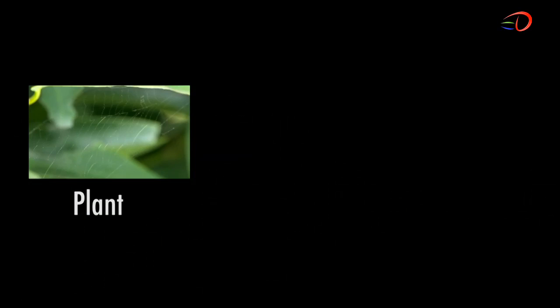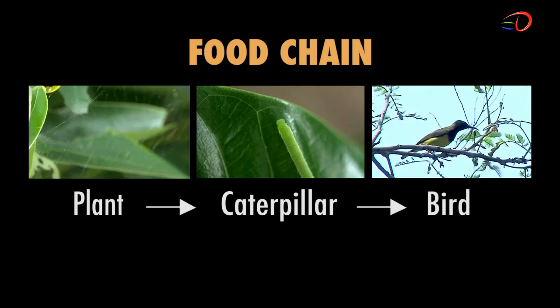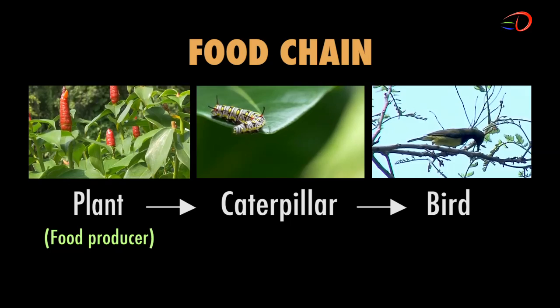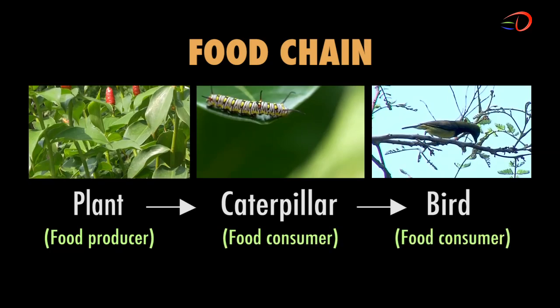The relationship between organisms can be represented in a food chain. In this food chain, the caterpillar eats the plant and the bird eats the caterpillar. In a food chain, the plant is the food producer as they make food through a process called photosynthesis. The caterpillar and the bird are food consumers. They do not make their own food. They eat plants or other animals to get the energy they need.